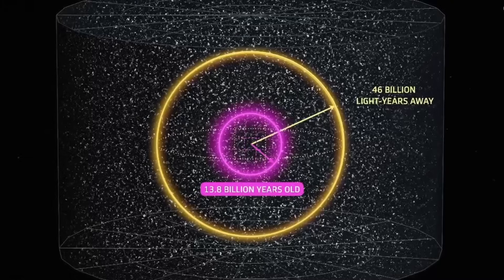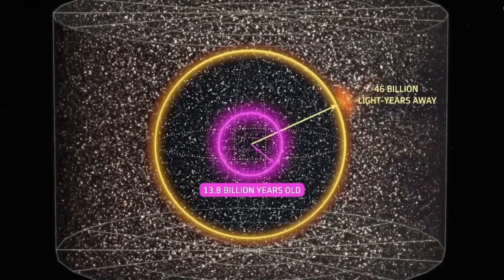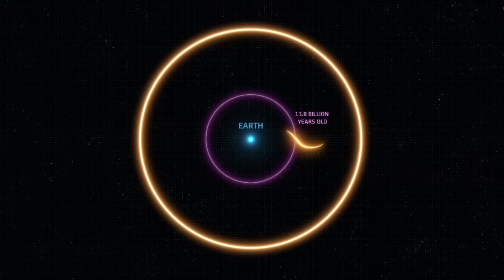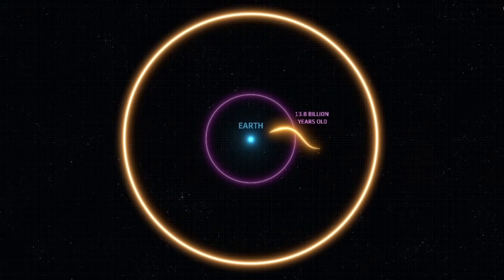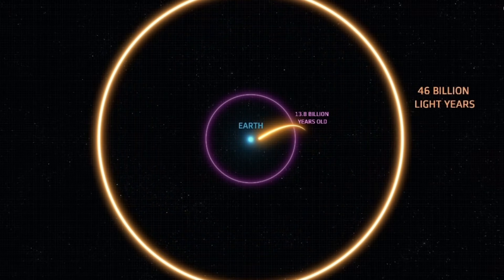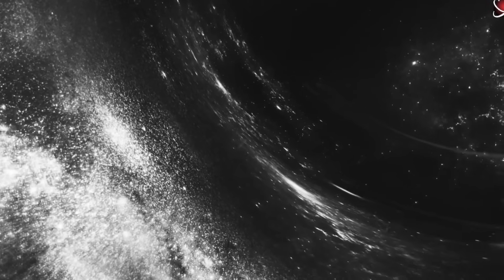This is what makes the discoveries so mind-blowing. We now have evidence pointing to a pressure void, a massive area beyond the observable universe, where the normal rules of physics seem to fall apart. What are these voids? Why don't they exist in the models we've been using for decades? Could they be the key to understanding what lies outside our universe?